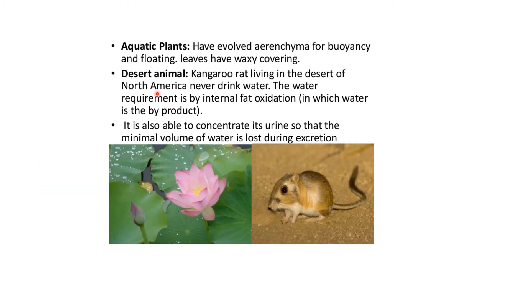Aquatic plants have evolved aerenchyma — air cavities for buoyancy and floating — and leaves have a waxy covering. Desert animals: the Kangaroo rat living in the deserts of North America never drinks water. The water required is obtained by internal fat oxidation in which water is a byproduct; this byproduct water is sufficient for the Kangaroo rat. It is also able to concentrate its urine so that a minimal volume of water is lost during excretion.